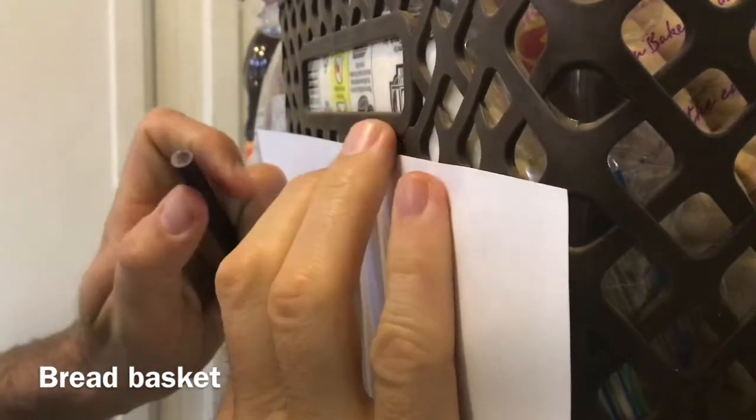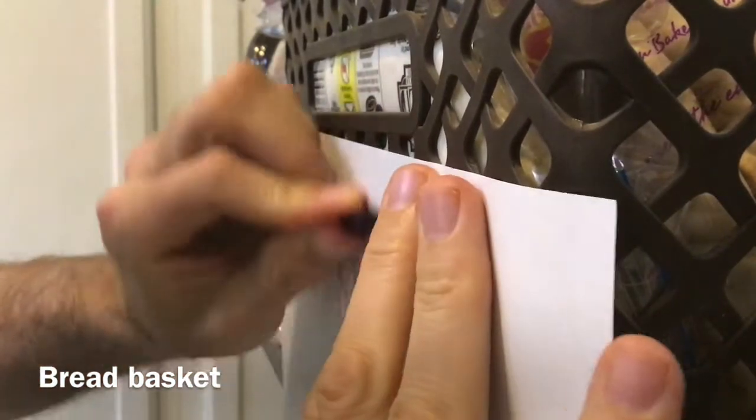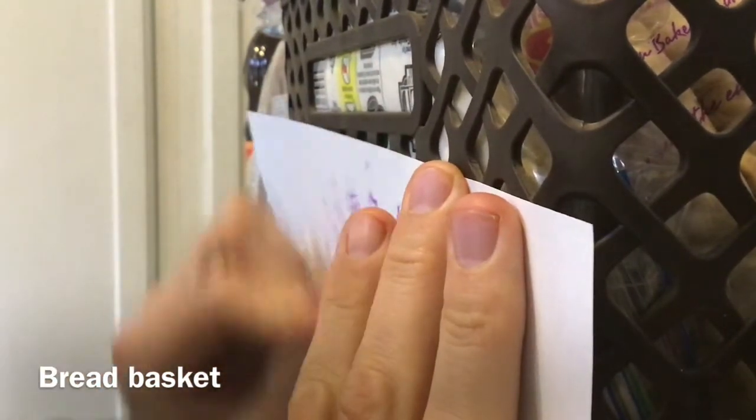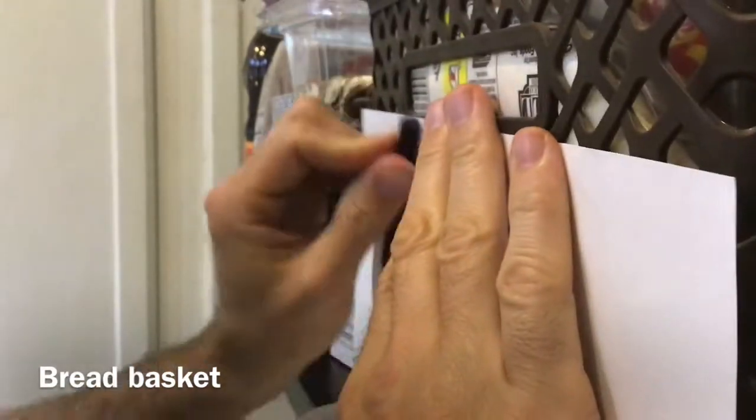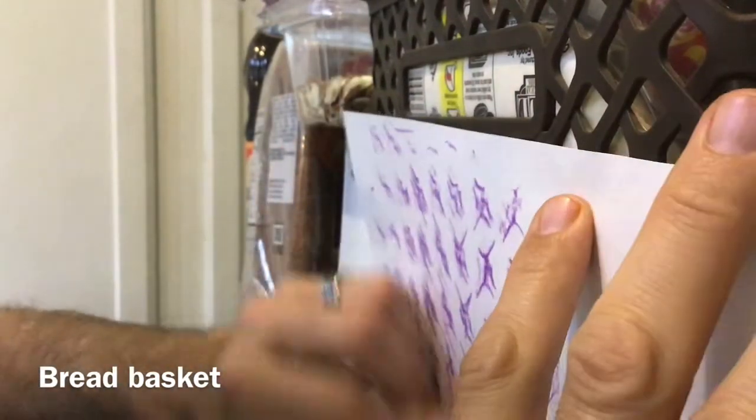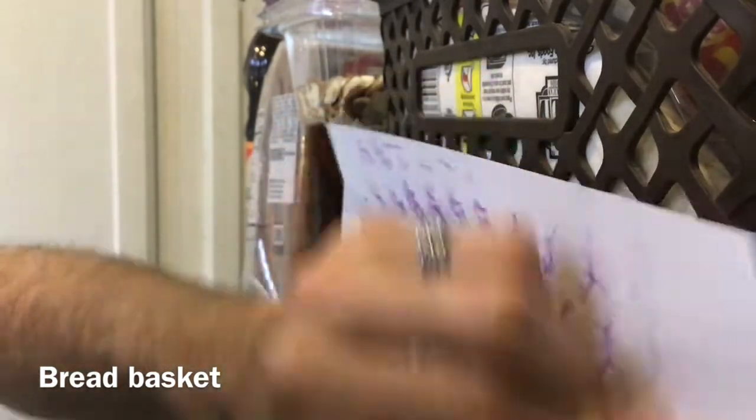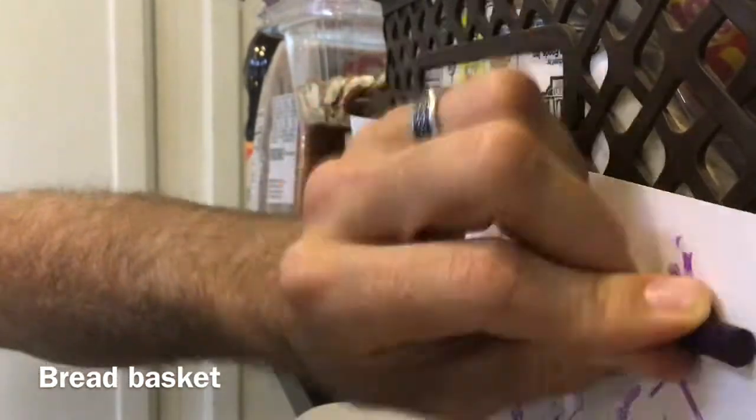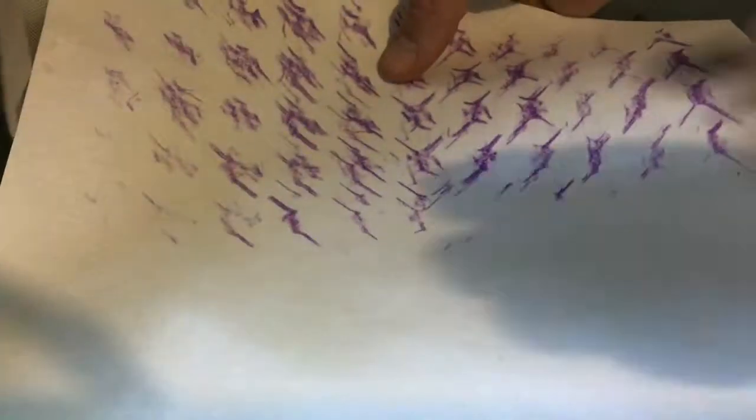Next I went around my house, I found a breadbasket that had this cool woven texture on it. Now you do need to help your paper stay as still as possible, so you want to hold it with one hand while you're rubbing with the other hand and try to make sure the thing that you are gonna rub doesn't move. But it could still look cool.